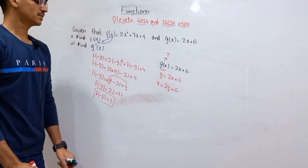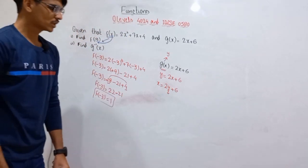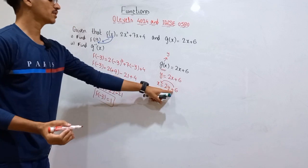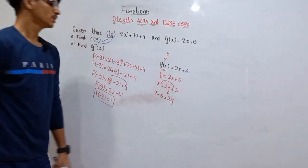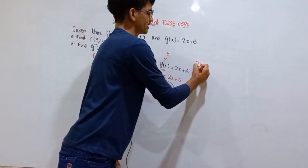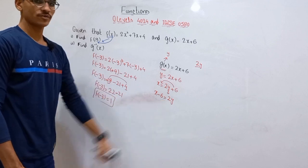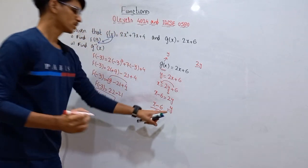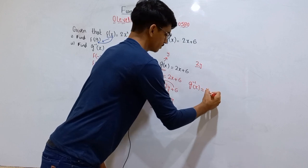The third step is to make y the subject. From x = 2y + 6, shift 6 to the other side — since 6 has a positive sign, it becomes negative: x - 6 = 2y. Since 2 is multiplying y, shift it to the other side as division: y = (x - 6) / 2. This y represents the inverse, so g⁻¹(x) = (x - 6) / 2.